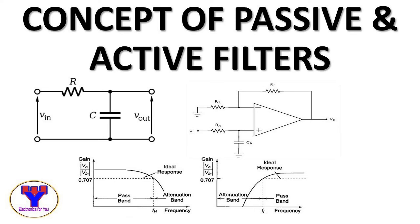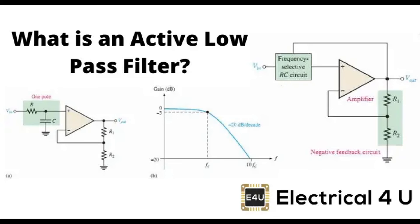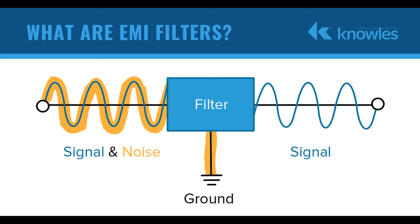4. Band-Stop Filter (BSF) Design: Also called a notch filter, it combines a low-pass and high-pass filter in parallel, with a frequency range blocked while others are allowed to pass. Functioning: This filter allows most frequencies to pass through unaffected but attenuates a specific band of frequencies. The notch frequency — the frequency attenuated the most — is determined by the values of the circuit's components.